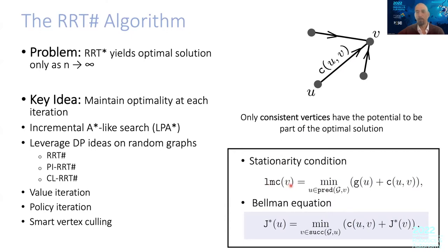The LMC value is the minimum of G plus some extra information about the cost to connect two nodes; it is more informed than the G value. When you look at your data structure and impose this stationarity condition, it's easy to show that only consistent vertices that satisfy the stationarity condition can be part of the optimal path. You try to make all vertices stationary, and if you can do that for the ones on the optimal path, you find the optimal path.